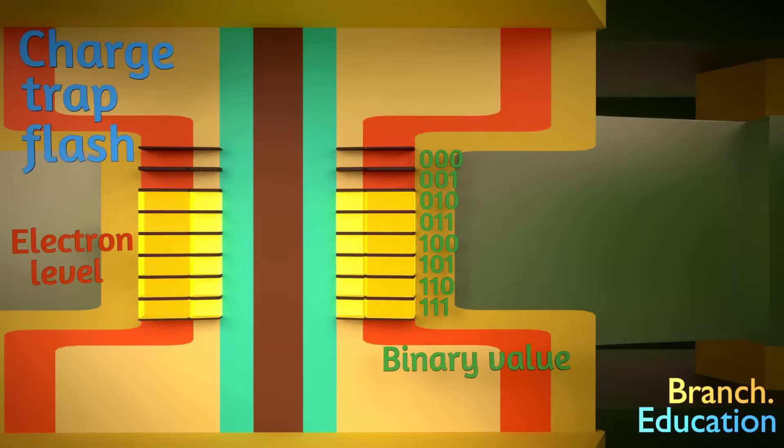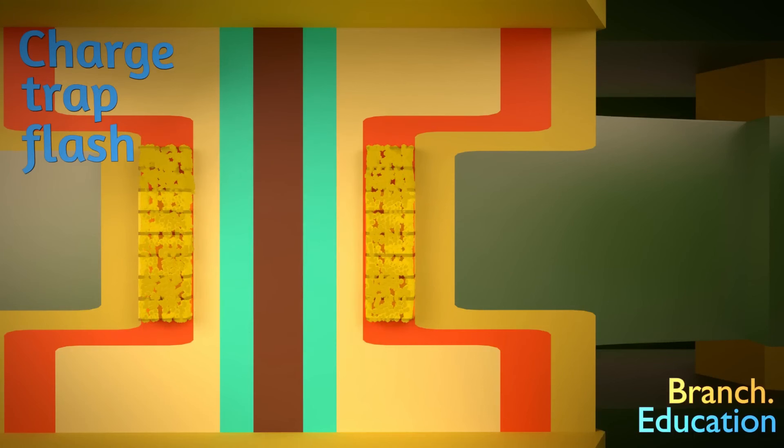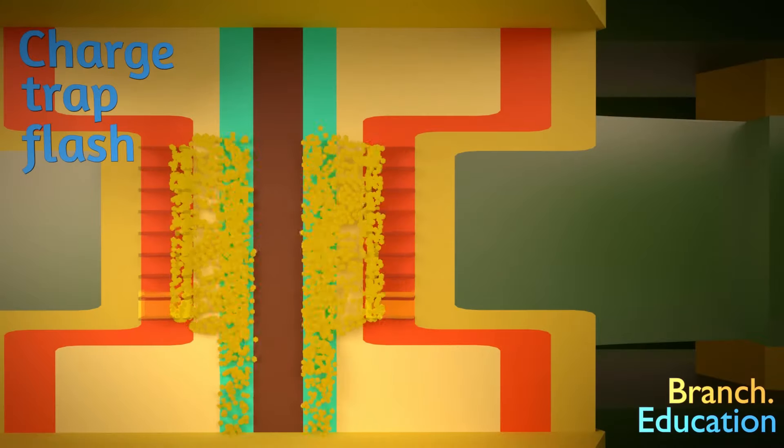Measuring this value doesn't change the amount of electrons, and once electrons are placed on the charge trap, they stay trapped there for years. However, when the memory cell is erased, the electrons are forcibly removed.